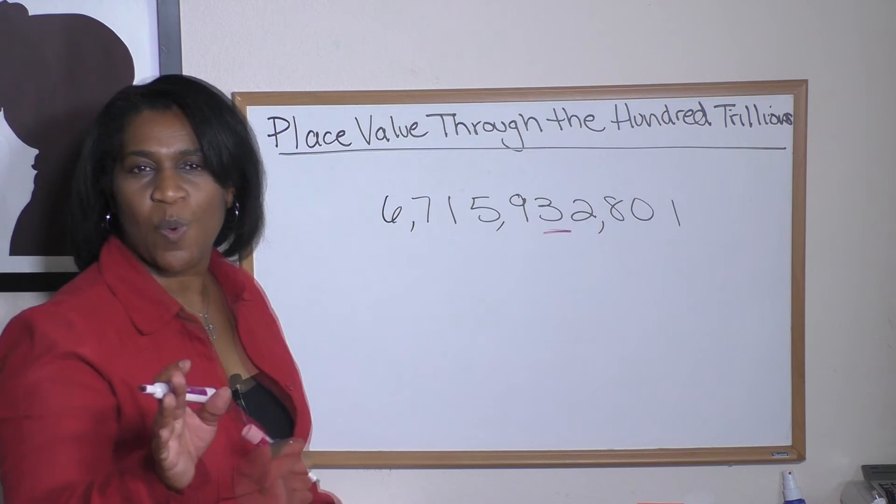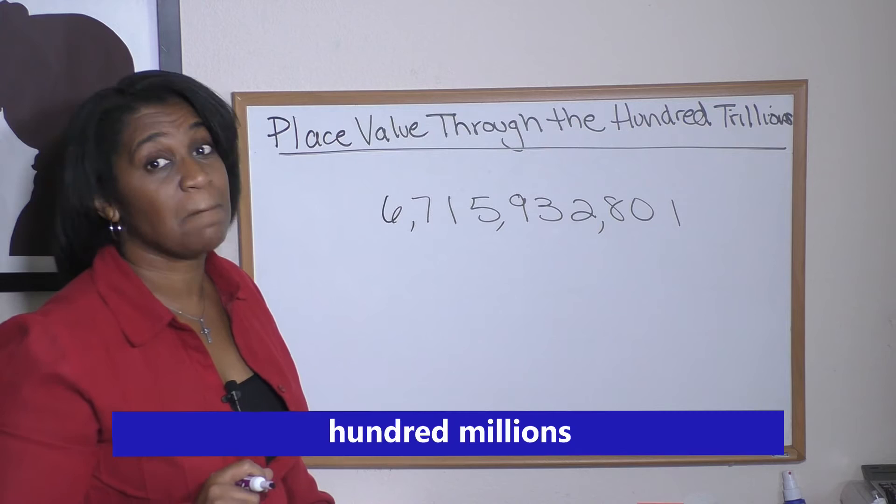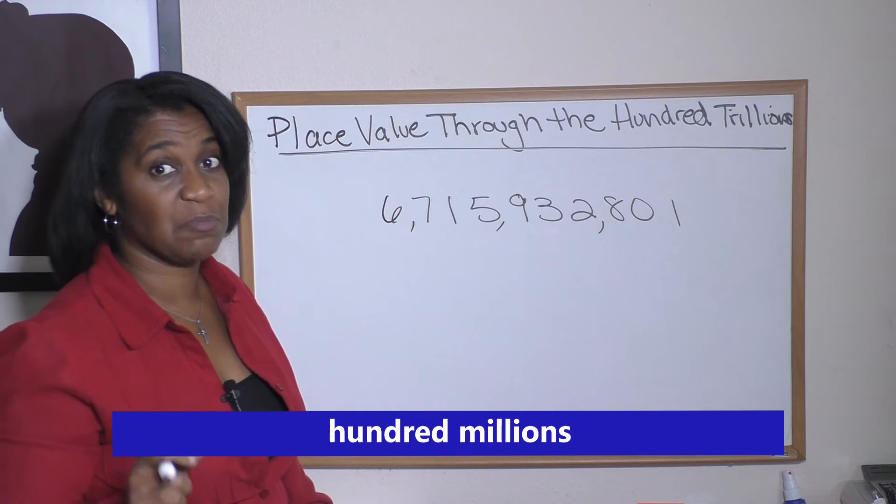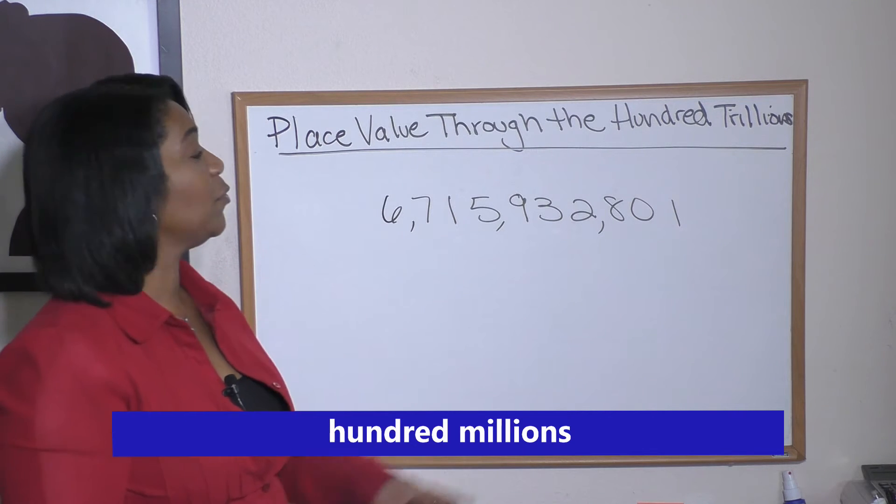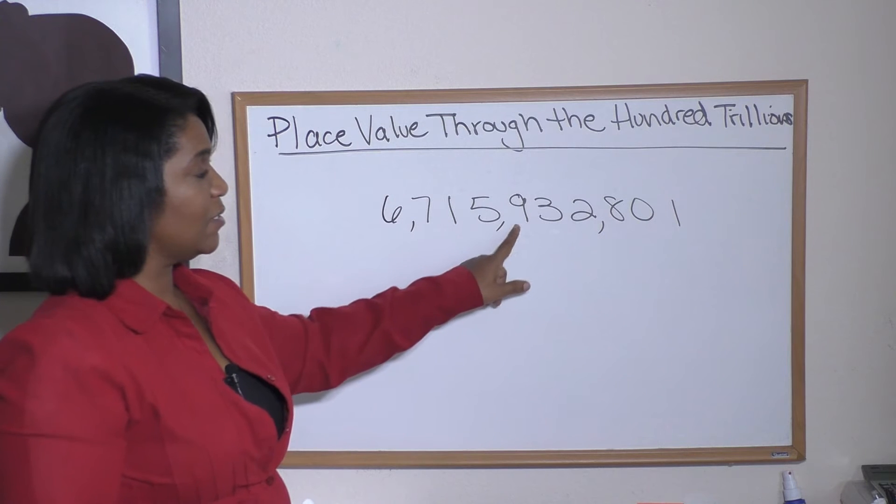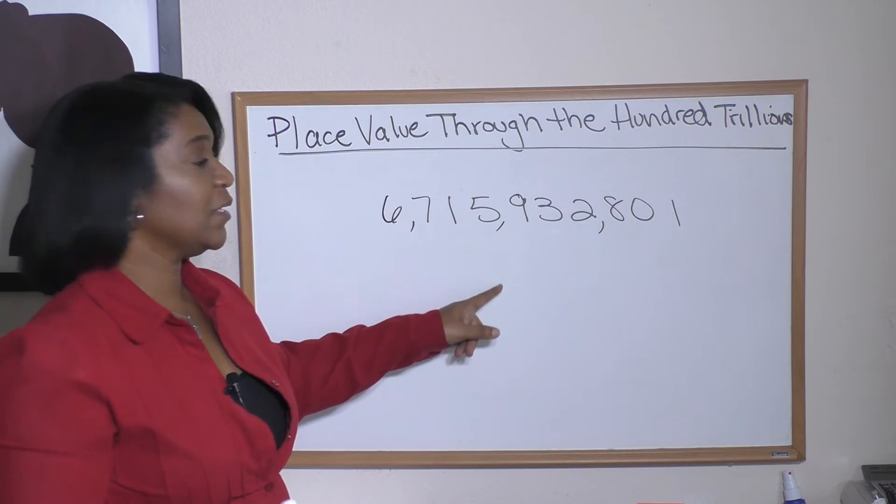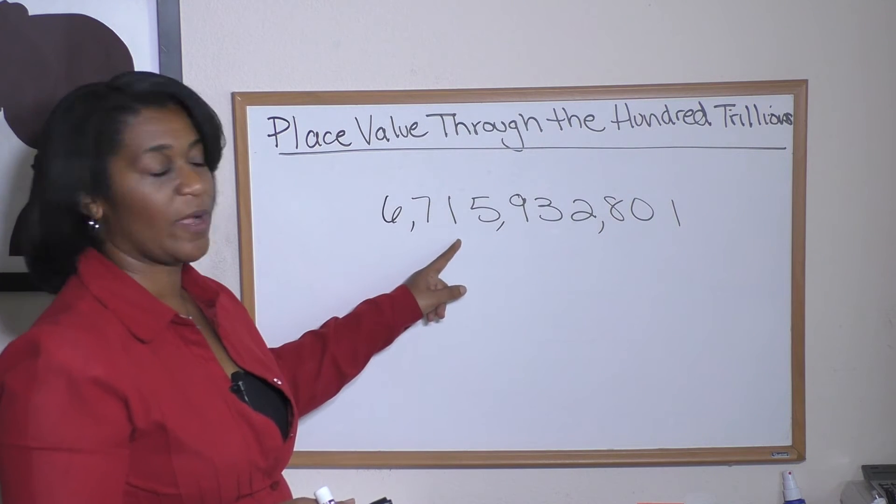Let's try one more with this number. What number is in the hundred millions place? Hundred million. So let the commas help you. First comma thousand, second comma million. So we know it's going to be in here somewhere. And since we said hundred million, it's the seven.